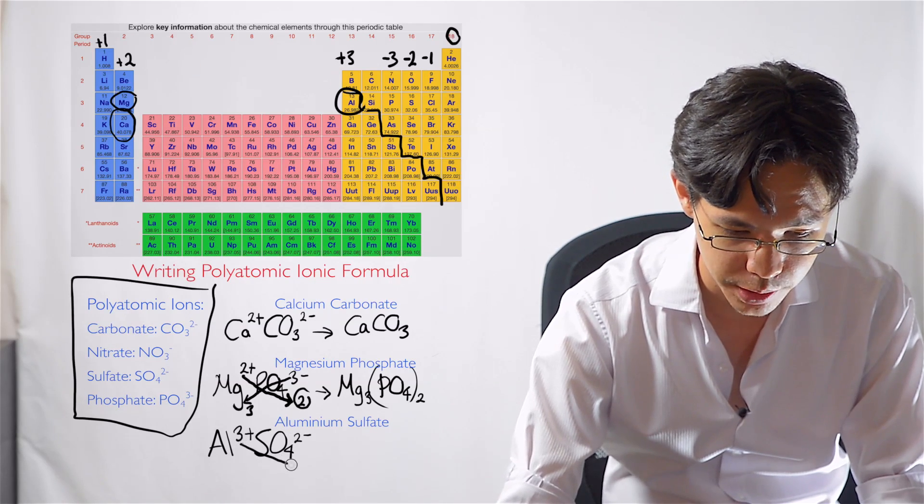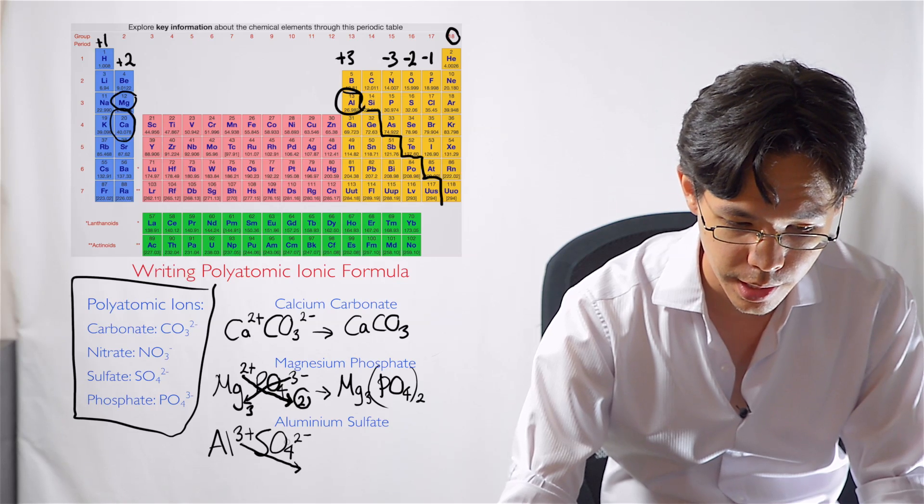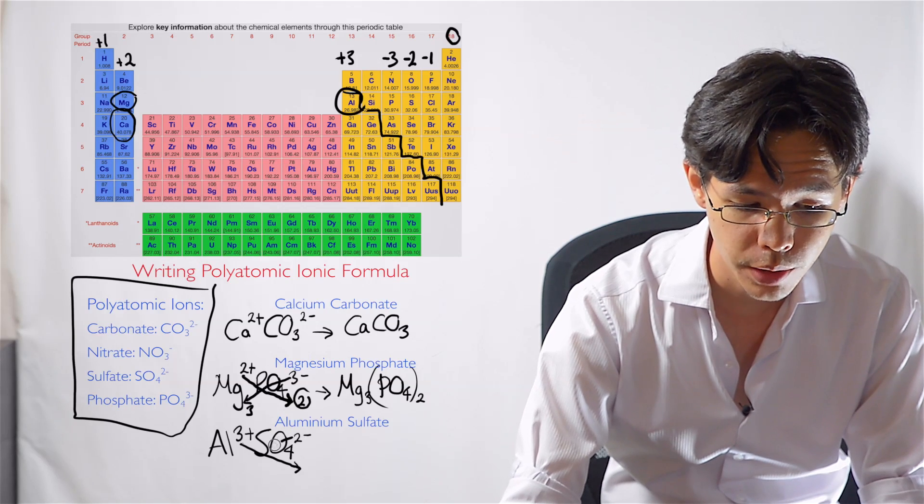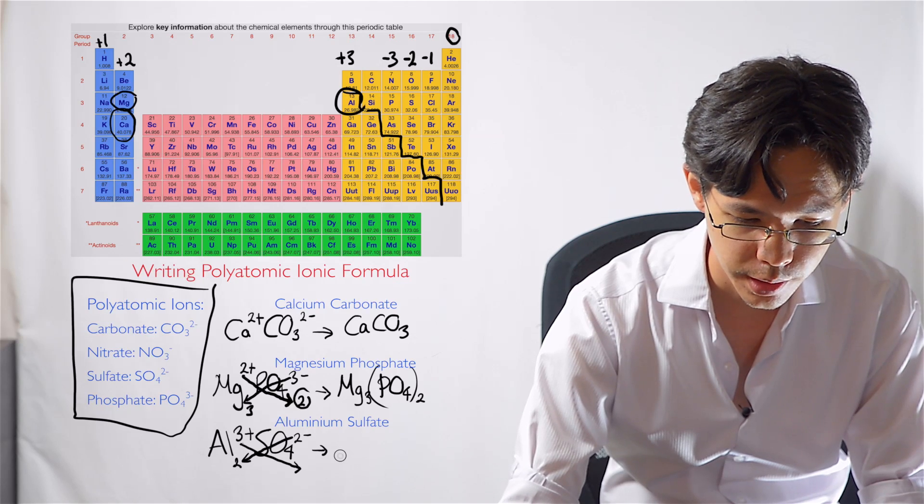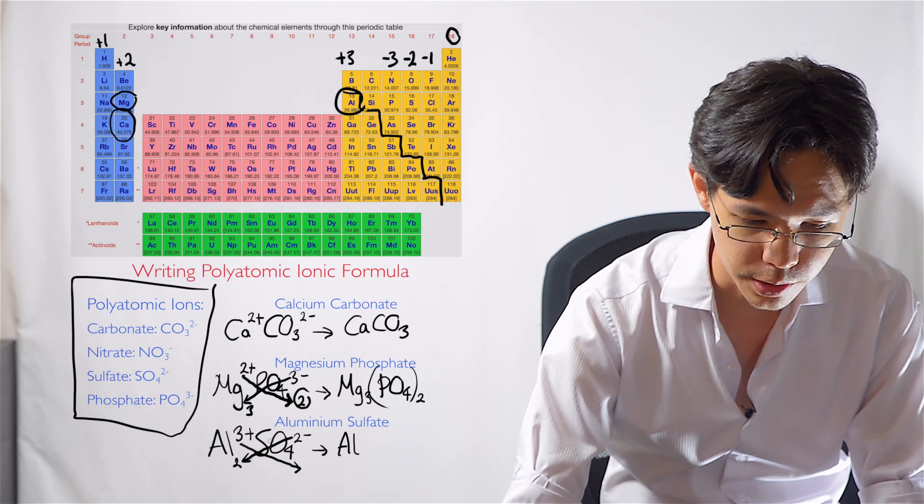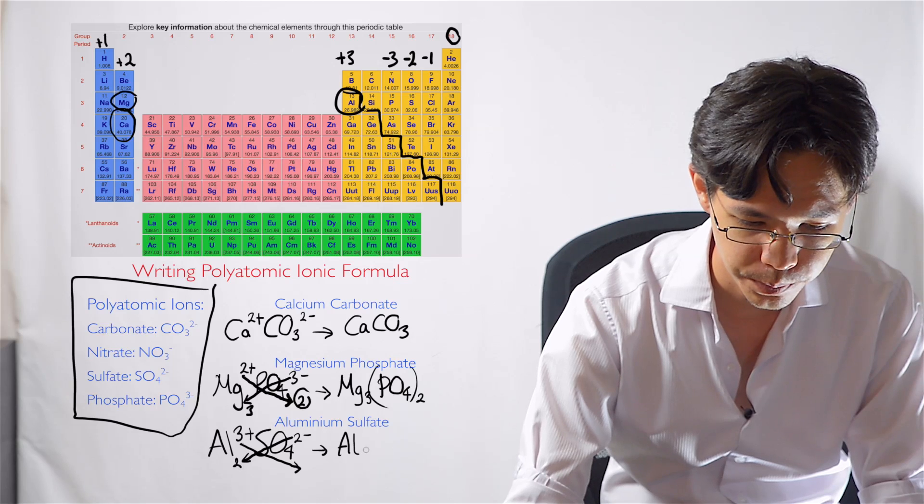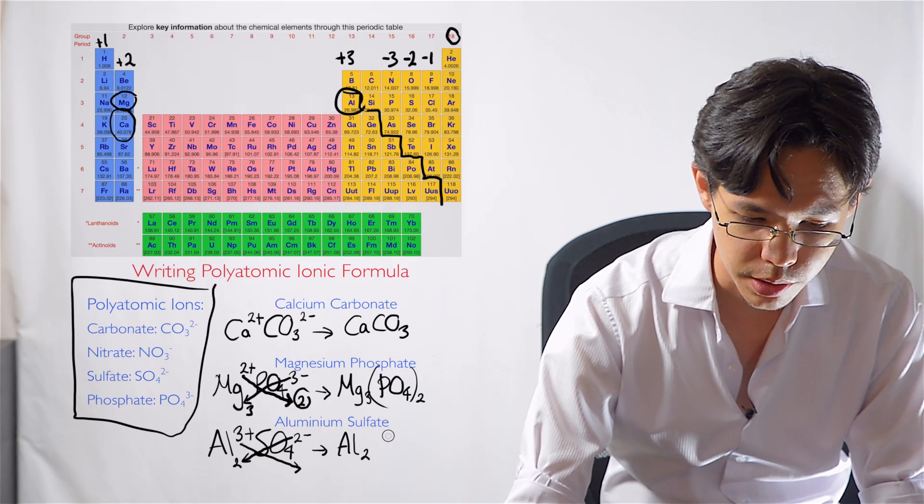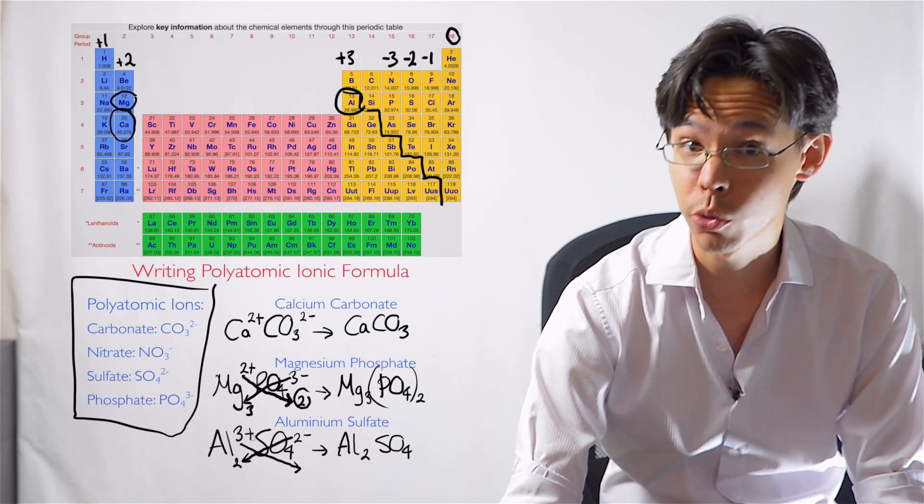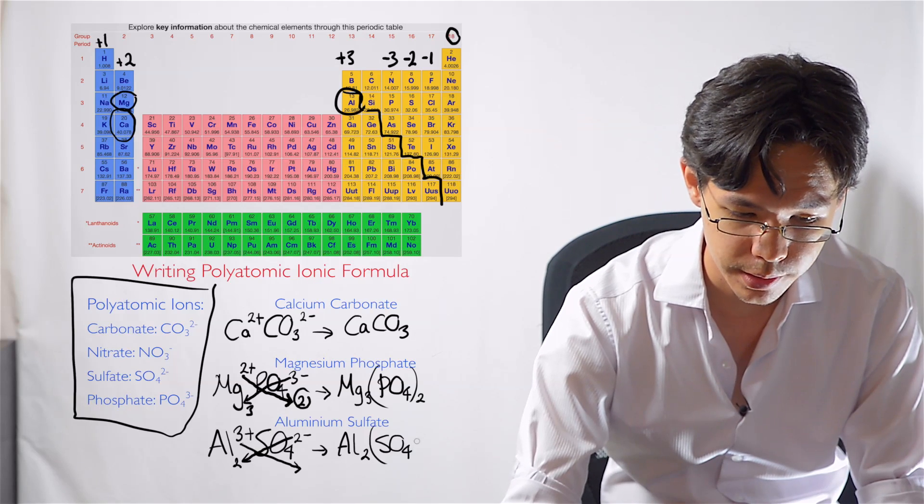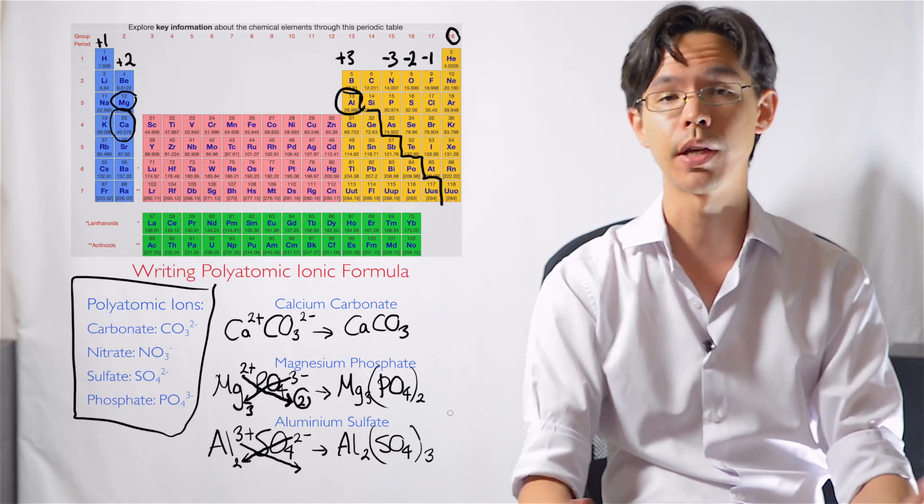So here we go. We take that 3, put it next to the sulfate. We take that 2 in the top right corner and we cross it over and we put it next to the aluminium. So we rewrite this now. Aluminium. And there's a 2 next to it now. We've got the sulfate. So SO4. But we want 3 groups of that. So I have to use my brackets. And we put the 3 down there. And we're done.